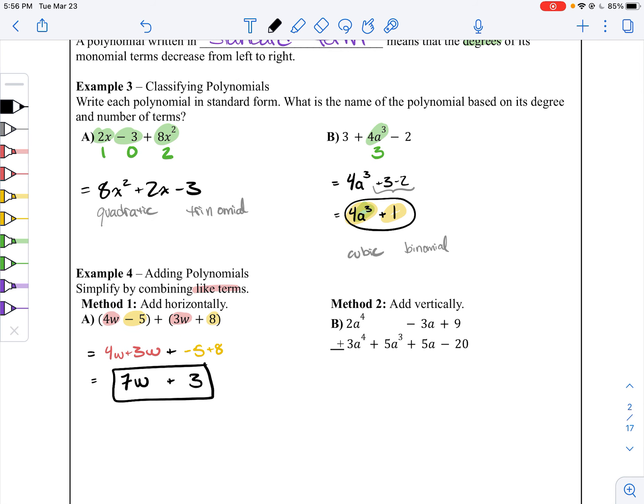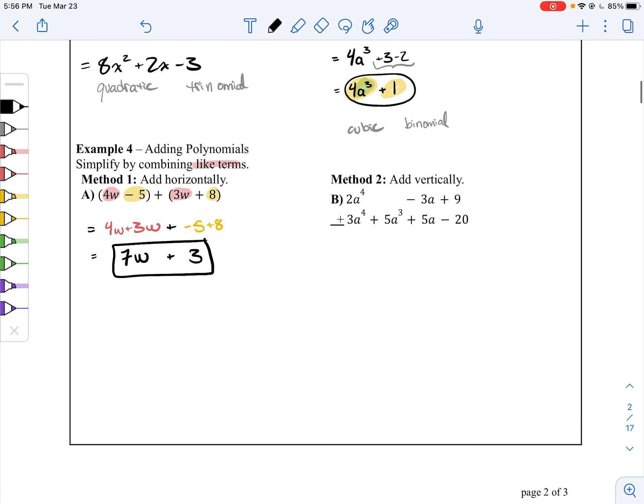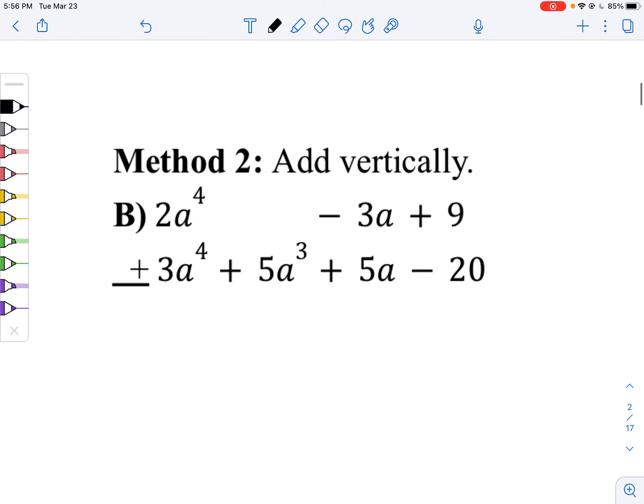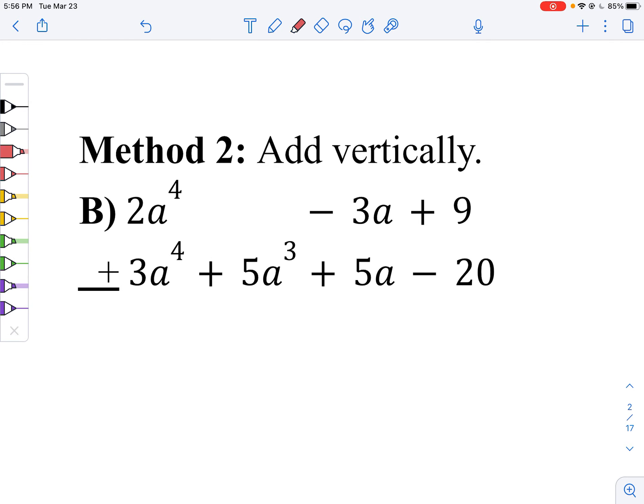I don't actually like to do it that way. I prefer the vertical way because it helps me keep track of like terms better. I see that you got your a to the fourth right here, your degree 4, those line up. Here, there's nothing to line up, so we'll just put 0. Then we've got our a terms to line up, and then our constants are going to be cool too.